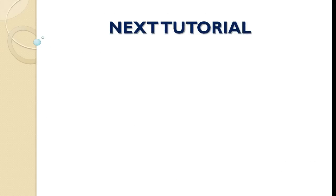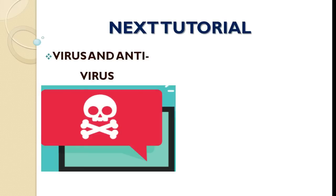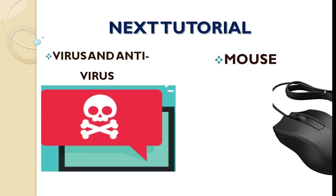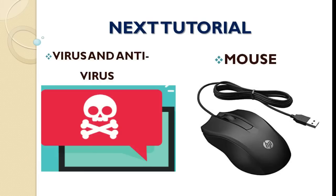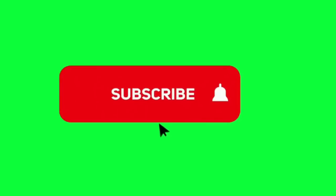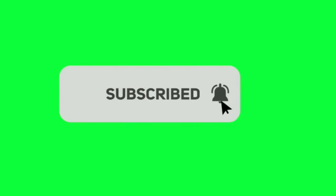Thanks for your time. In our next tutorial we shall be looking at: 1. Computer virus and antivirus — what a virus is, how viruses affect the computer and its files, how it is transferred, and how to remove or prevent virus in the computer system. 2. We will also be looking at the mouse — how it works, parts of the mouse and how to protect the mouse. Hope this short clip is well understood. Please drop your comments, suggestions and requests in the comment section below, and don't forget to hit the subscribe button. Thanks.